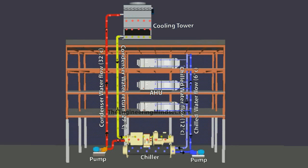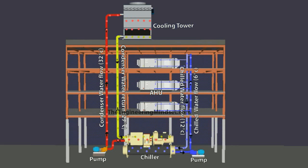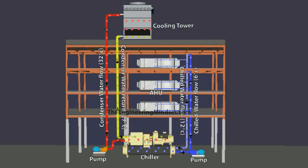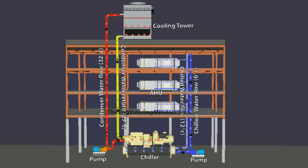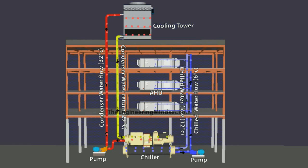Surge will also usually occur when the chiller is run at part load — i.e., lower than the maximum design load — and once the refrigerant flow rate through the compressor becomes too low, it causes surge. Some ways to get around this include fitting a variable speed drive or variable frequency drive onto the induction motor that drives the compressor, which changes the rotational speed to modulate capacity. Some chillers may have a hot gas bypass built in, allowing capacity to be reduced while maintaining sufficient gas flow through the compressor. Some manufacturers also fit variable diffusers into the compressors, which reduces the gap in the diffuser to maintain gas velocity into the volute.